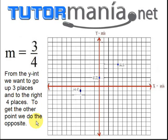And as I said, to get the next point, you don't have to make a table of values. Basically, from the y-intercept, we want to go up 3 places and to the right 4 places. To get the other point, we do the opposite.